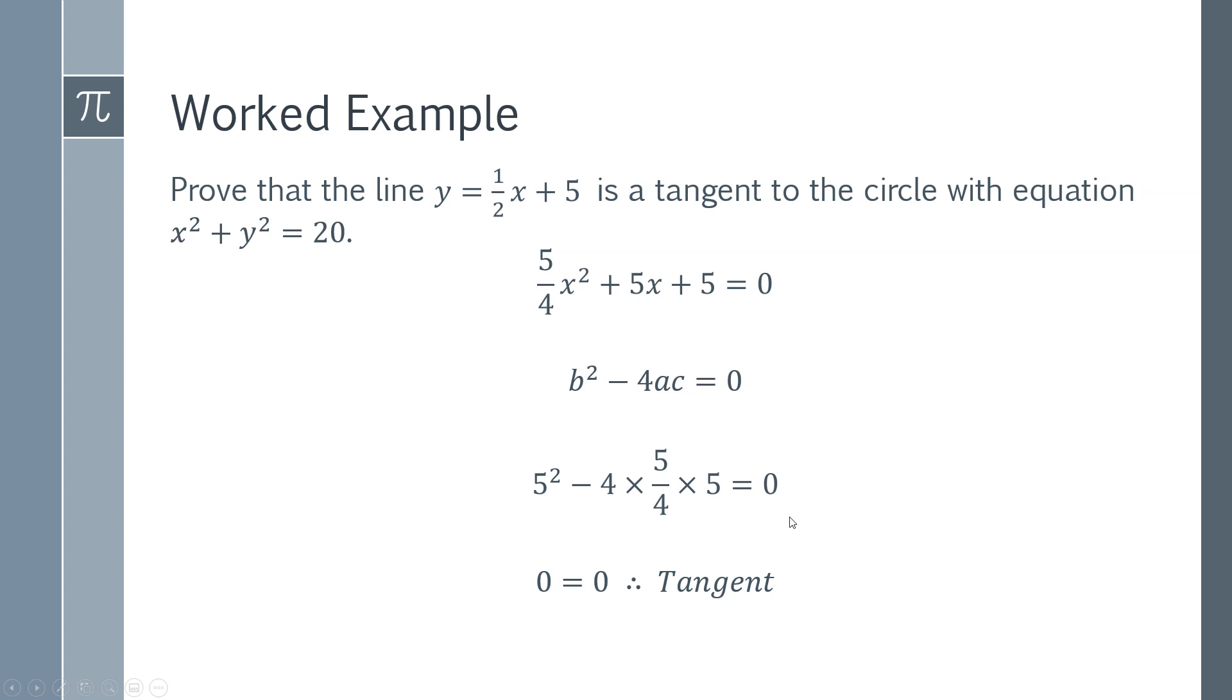You've got zero equals zero. You've proved that the discriminant here equals zero, so you've proved that there is only one solution. You're in this case here. If you wanted, you can find that point. If you solve this equation here, perhaps using the quadratic formula, you would find that x = −2. Then you could take −2 and put it into this expression here, and you would find that you have a solution for y of 4, giving you the point of intersection (−2, 4). So that is how you can prove that a line is a tangent to a circle.